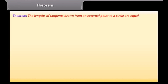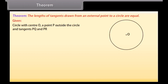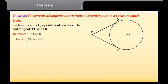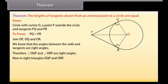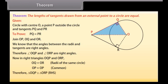Theorem: The lengths of tangents drawn from an external point to a circle are equal. We are given a circle with center O, a point P lying outside the circle, and two tangents PQ and PR on the circle from P. We need to prove that PQ is equal to PR. Let's join OP, OQ, and OR. We know that the angles between the radii and tangents are right angles. Therefore, angle OQP and angle ORP are right angles. Now in right triangles OQP and ORP, OQ equals OR because these are radii of the same circle, and OP equals OP (common). Therefore, by RHS congruence rule, triangle OQP is congruent to triangle ORP. This gives PQ equal to PR, because congruent parts of congruent triangles are always equal.